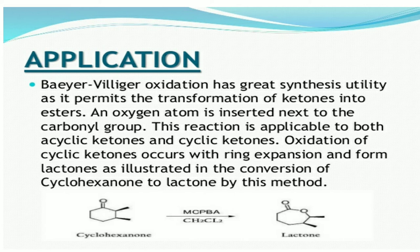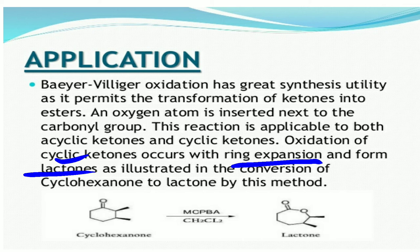The Baeyer-Villiger oxidation has great synthetic utility as it permits the transformation of a ketone into an ester; an oxygen atom is inserted next to the carbonyl group. This reaction is applicable to both cyclic and acyclic ketones. The oxidation of a cyclic ketone occurs with ring expansion to form a lactone — for example, the conversion of cyclohexanone to a lactone using MCPBA (meta-chloroperoxybenzoic acid) in CH₂Cl₂ as solvent.